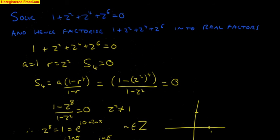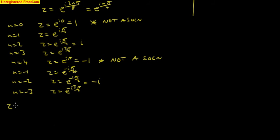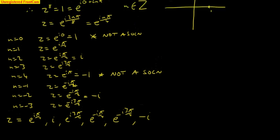There are all of our solutions. So let's just check the question. Solve that and hence factorize. So the solving part, we can just write our solutions now. So we have z equals e to the i pi by 4. We've got i, we've got e to the i 3 pi by 4, e to the negative i pi by 4, e to the negative i 3 pi by 4, and negative i. So there are the six solutions that we get here.